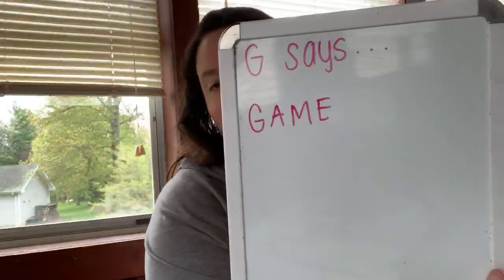So when we do the letter G in our alphabet song, we use the word game. G, game, guh. So the first word I'm going to write is game, which is G, A, M, E. Game. We like to play games together.